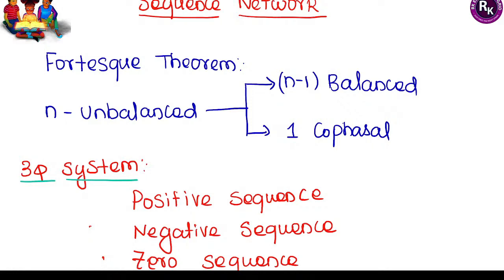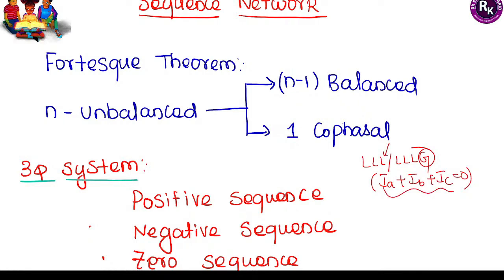Different sequence networks: symmetrical networks (three-line fault or three-line-to-ground fault) remain balanced during fault. For symmetrical fault, the sum of three-phase currents equals zero — this is balanced fault. Triple-line and triple-line-to-ground faults give the same condition. For unsymmetrical fault analysis, we apply the Fortescue theorem: an n-phase unbalanced system can be resolved into (n−1) types of balanced components plus one co-phasal (zero sequence) component.